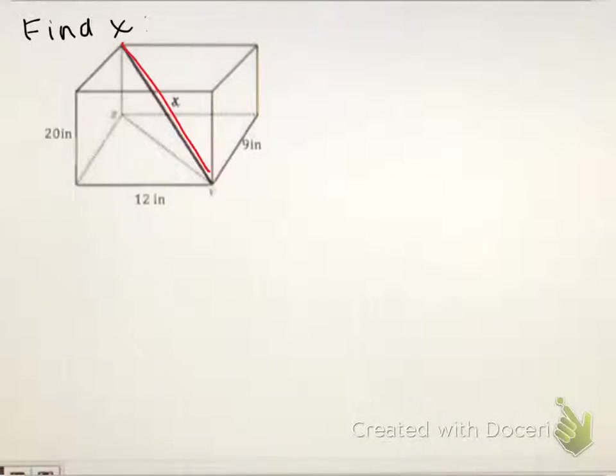So first let's look at what we know. We know this length here is 9, which means every parallel part of this shape is also 9 inches. We also know that this front side length here is 12 inches, which means every parallel side length is also 12 inches, and we know the height of this box is 20 inches, and again, all of the parallel sides are 20 inches.